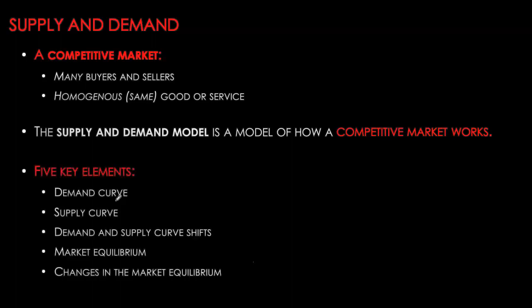The key elements of this model are the demand curve, supply curve, and demand and supply curve shifts. Then we look at the market equilibrium — what's the final negotiation that satisfies both buyers and sellers — and changes in market equilibrium. So let's start with our discussion of the demand curve.